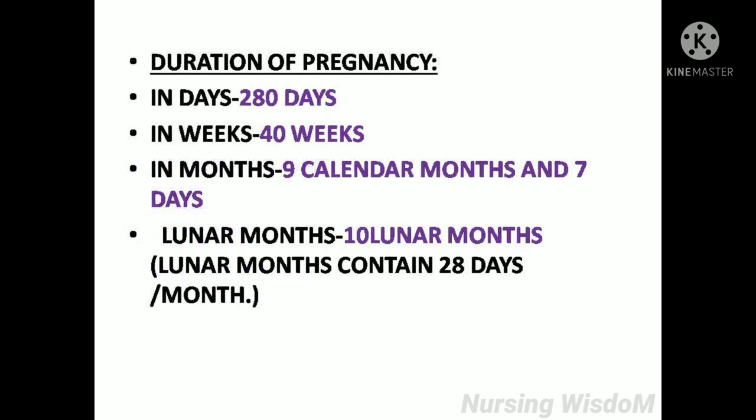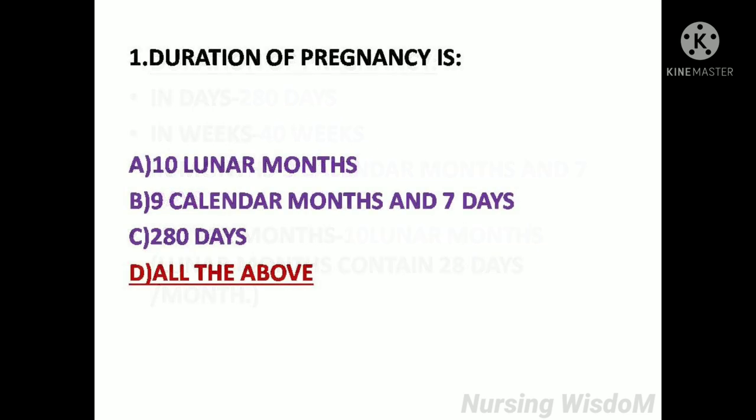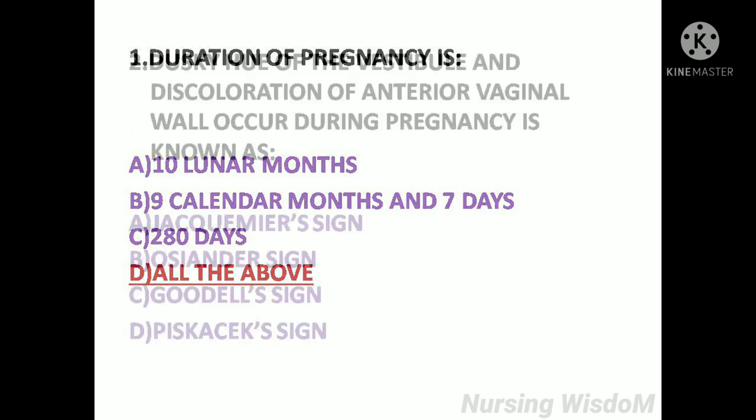Duration of pregnancy is 280 days, 40 weeks, 9 Calendar Months and 7 Days, or 10 Lunar Months — because a Lunar Month contains 28 days. So here the answer is Option D: All of the above.